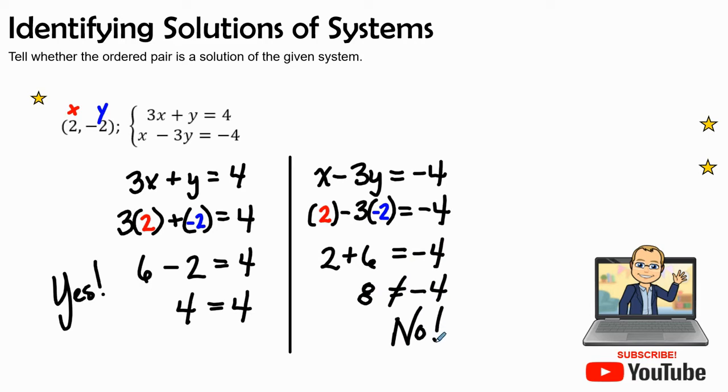(2, -2) is not on the linear function x minus 3y equals negative 4. So for this to be a solution in this system, we have to have a yes for both of the equations. It can't be just on one line.